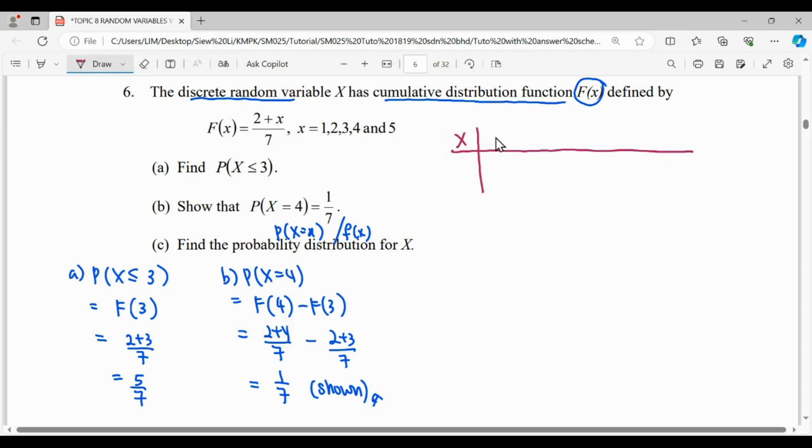We have our X here: 1, 2, 3, 4, 5 as stated in the equations. Our cumulative probability F(x) will be: when X equals 1, it will be (2 + 1)/7 which is 3/7. When X equals 2, it will be 4/7. When X equals 3, it will be 5/7.